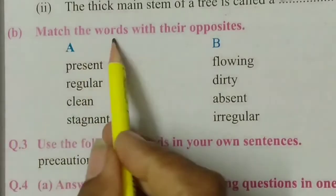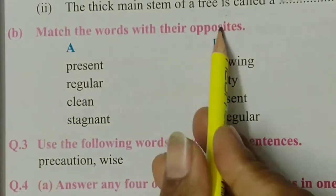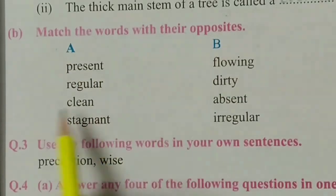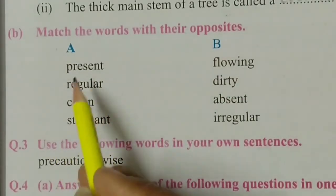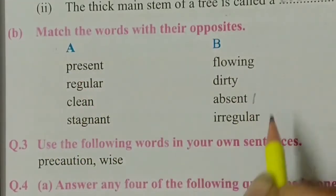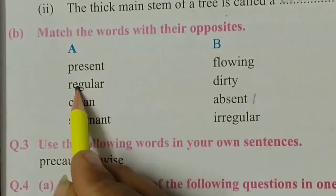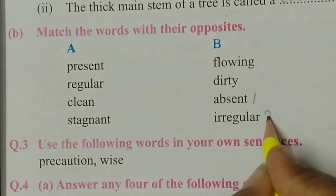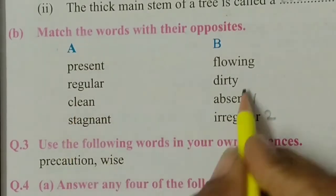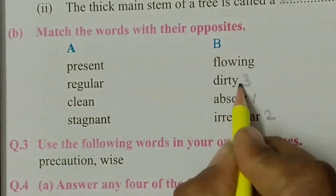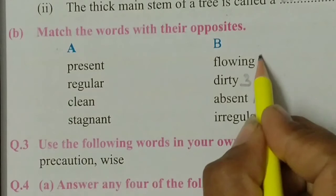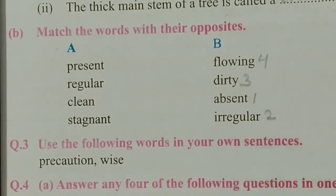Next is match the words with their opposite — we have to match the words with their meanings. Present — absent. Regular — irregular. Clean — dirty. Stagnant — flowing.